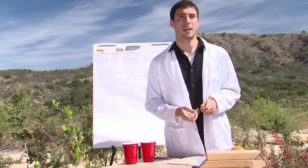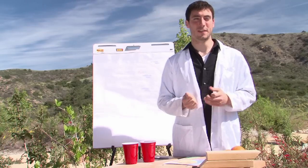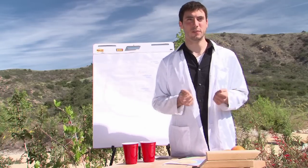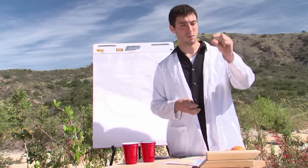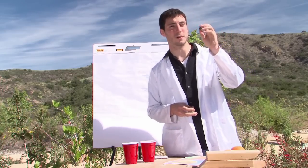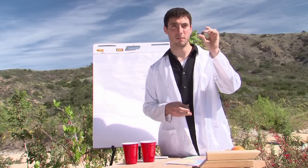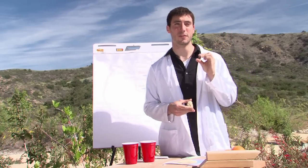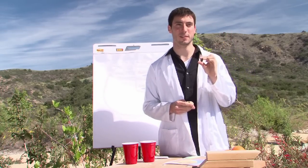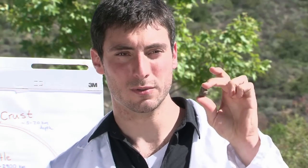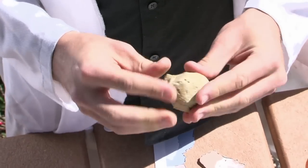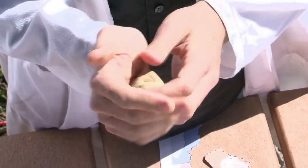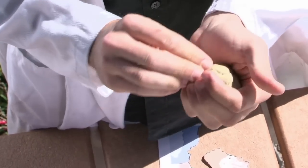Making a model for students to help understand this can be very useful, and you can do that with just a few things. First, take a little rock or a round ball — that'll represent the earth's core because it's solid. Then you surround that rock with a bunch of clay and roll it into a ball; that clay will represent the mantle.